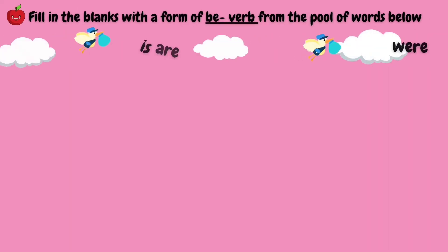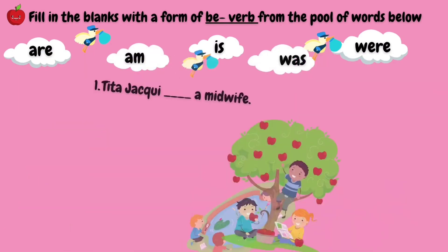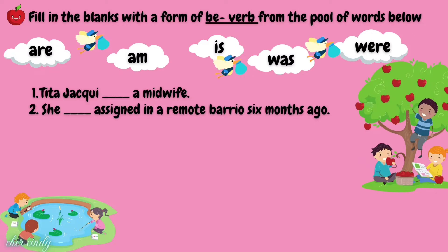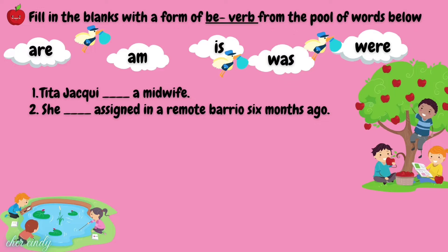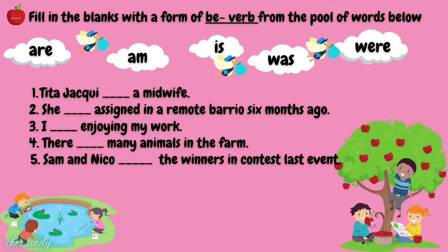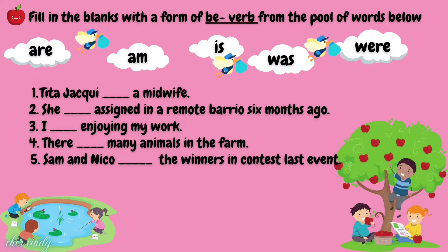So now let's have an exercise. Fill in the blanks with a form of be-verb from the pool of words below. Number 1: Tita Jackie blank a midwife? Number 2: She blank assigned in a remote barrio 6 months ago. Number 3: I blank enjoying my work. Number 4: There blank many animals in the farm. And number 5: Sam and Nico blank the winners in the contest last event.